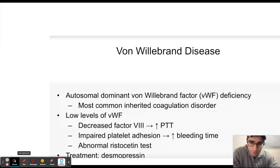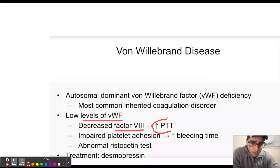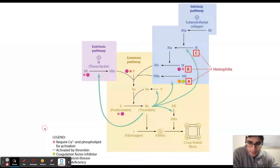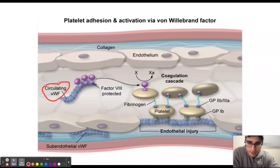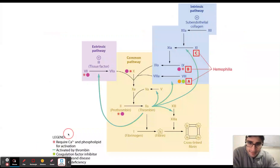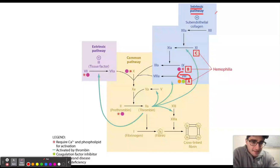Von Willebrand disease is an autosomal dominant disorder that leads to low levels of Von Willebrand factor. Low levels of Von Willebrand factor result in decreased factor 8 levels, which prolongs PTT. Von Willebrand factor is important in stabilizing factor 8, increasing its half-life. Factor 8 is part of the intrinsic pathway, and PTT measures the intrinsic pathway, so low factor 8 increases PTT due to disruption of the intrinsic pathway.